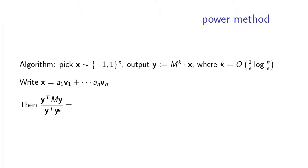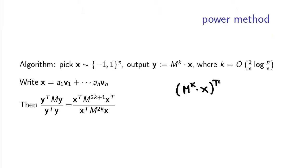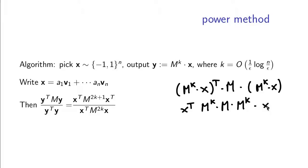Let's see what is the Rayleigh quotient of the vector that we output. y is m to the k times x. What is y transpose m y? It's m to the k x transpose times m times m to the k times x. Since m and m transpose are the same, it's x transpose m to the 2k plus 1 times x. In the denominator, it's the same calculation except without the m in the middle, giving x transpose m to the power of 2k times x.